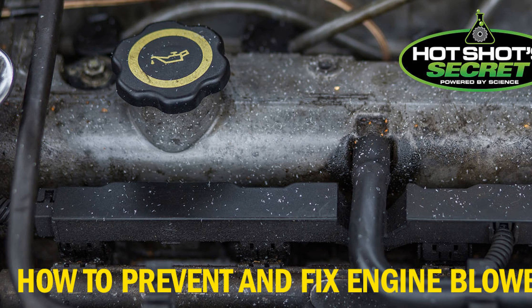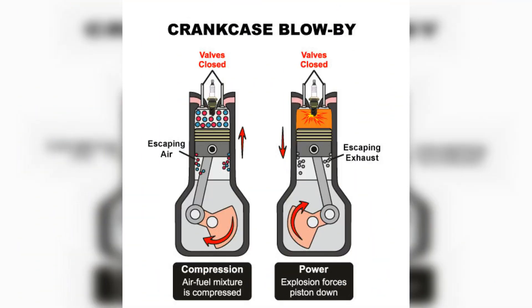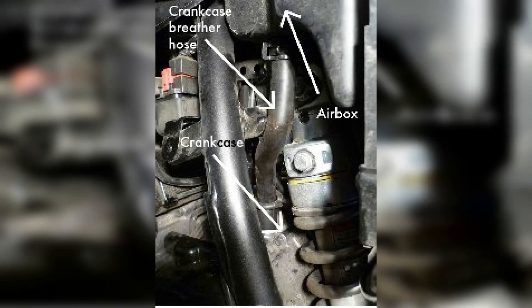Each engine is also equipped with special elements that separate oil particles from gases and return them to the crankcase cavity. The ventilation systems of modern diesel power units include the following elements: oil separator, a breather, two branch pipes, and a gas pressure valve. The operation of the system consists of passage of gases into the head cover cavity through the diesel breather, separation of oil in the oil separator and its supply to the valves, and mixing and supplying gases to the manifold through the air manifold.